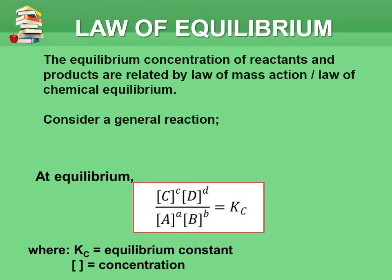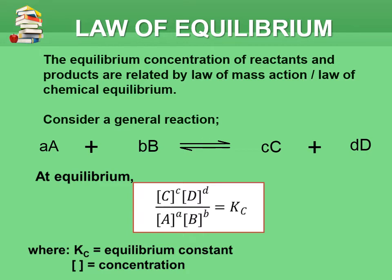The equilibrium concentrations of reactants and products are related by the law of mass action, or law of chemical equilibrium. Let's consider a general reaction aA plus bB becoming cC plus dD, whereby the small letters a, b, c, and d represent the stoichiometric coefficients of each species in the balanced equation.